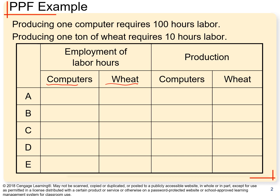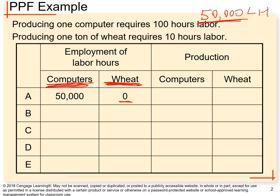For example, let's suppose we decided to allocate all 50,000 labor hours on production of only computers. Our question is: how many hours can we spend in order to produce units of wheat? The answer is going to be zero, because we only have 50,000 labor hours available. Remember, this is just a random example — it doesn't apply to real data in our economy. It's a simple example so it's easier for us to analyze.